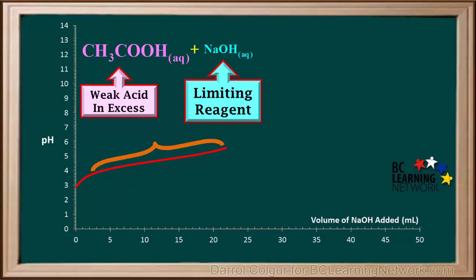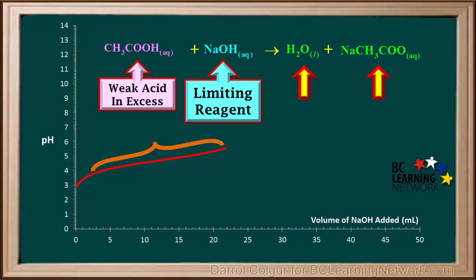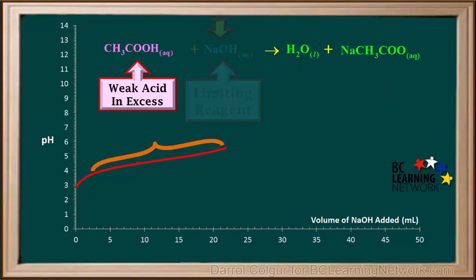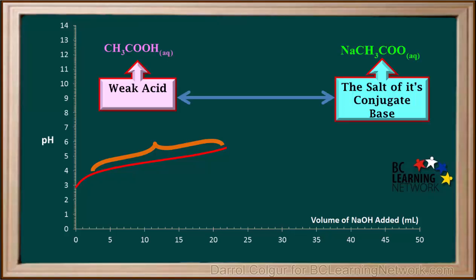During the time represented by this section of the graph, we're adding NaOH to the weak acid CH3COOH, but the weak acid is still in excess. So the NaOH will react with some of the acid, forming water and the salt sodium acetate, NaCH3COO. Because NaOH was the limiting reagent, it will all be consumed, and the quantity of water formed is insignificant compared to the water already in the solution, so we'll discard the formula for water. At this point, we have a mixture of a weak acid and the salt of its conjugate base.